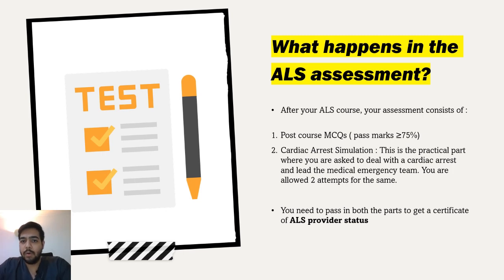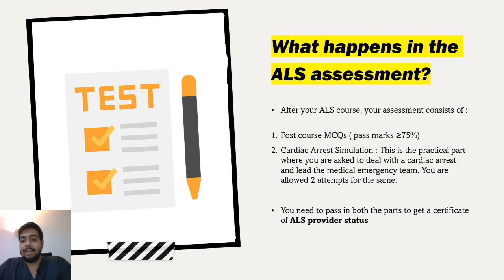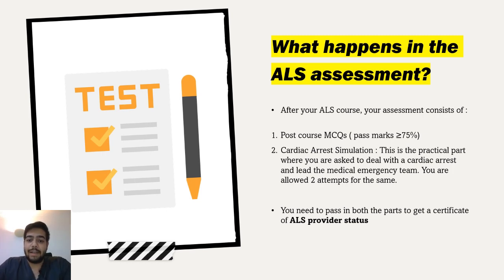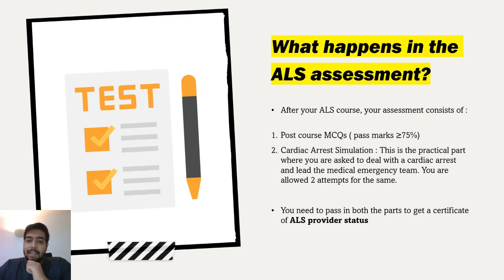What happens in the ALS assessment? After going through all the course material, lectures, and teaching, you sit an assessment to receive your ALS certificate. This consists of two parts: first, a post-course MCQ with a passing mark of 75% or above; and second, a cardiac arrest simulation — a practical assessment where you lead the medical emergency team through a cardiac arrest scenario. You are allowed two attempts at the simulation, and you must pass both parts to achieve ALS provider status and certification.